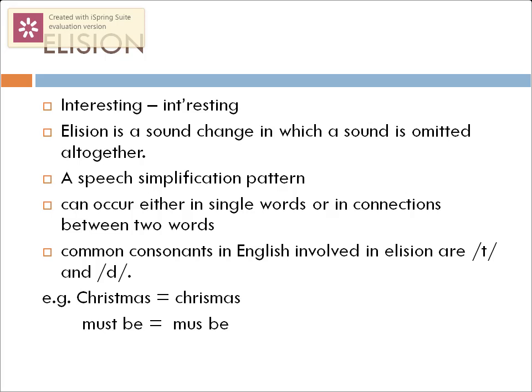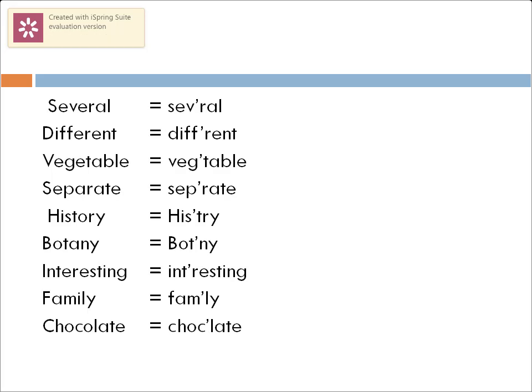Elision can also happen between two words: we write 'must be' but when put together it sounds like 'muss be,' and the sound /t/ is omitted. The most common consonants where elision happens in English are /t/ and /d/. Further examples: 'several' is said as 'sevral,' 'different' as 'difrent,' 'vegetable' as 'vegtable,' 'separate' as 'seprate.' Words like 'history,' 'botany,' 'interesting,' 'family,' and 'chocolate' all lose one sound and become fewer syllables.